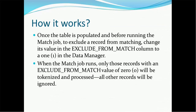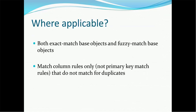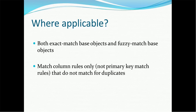Once the table is populated and before running the match job, to exclude a record from matching we change its EXCLUDE_FROM_MATCH column value to 1. When the match job runs, only those records with EXCLUDE_FROM_MATCH value 0 will be tokenized and processed; all other records will be ignored. This applies to both exact match and fuzzy match base objects, using match column rules — not primary key match rules.